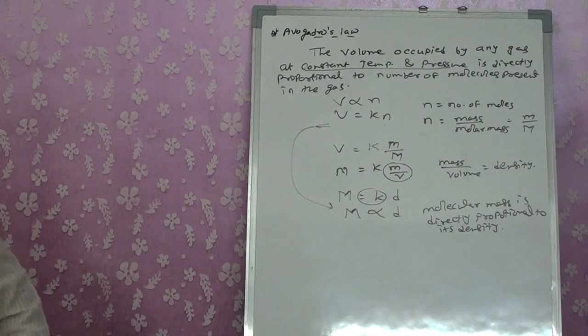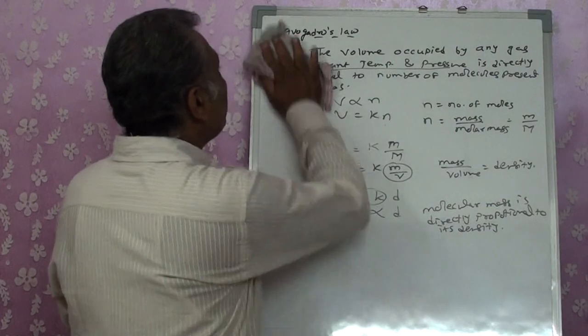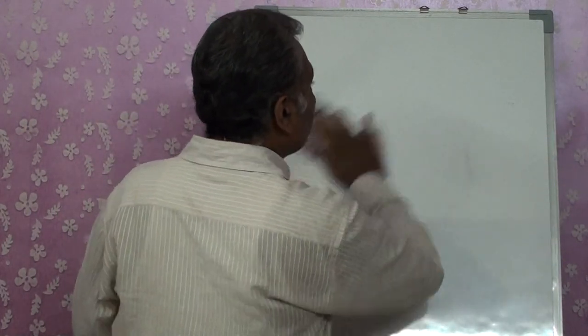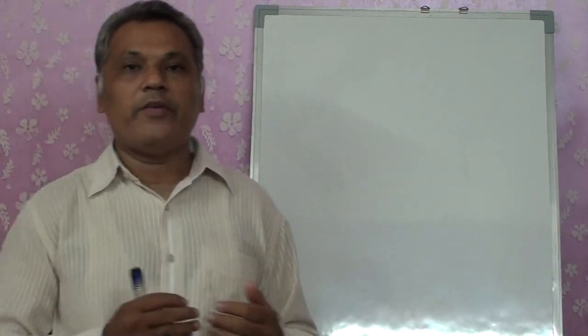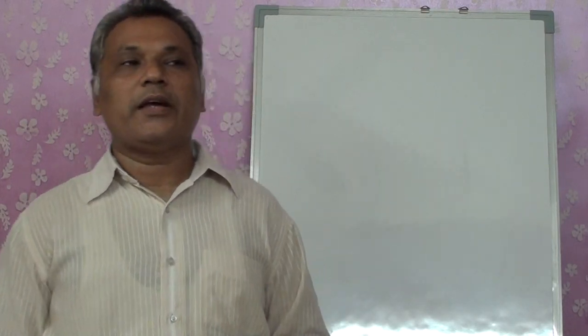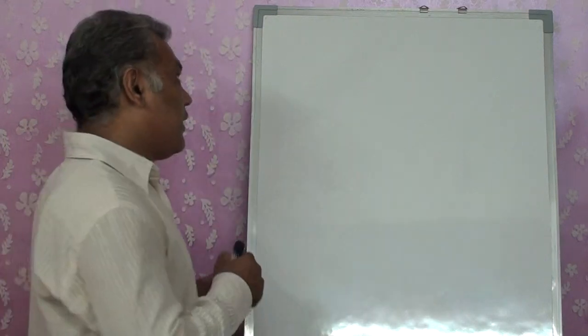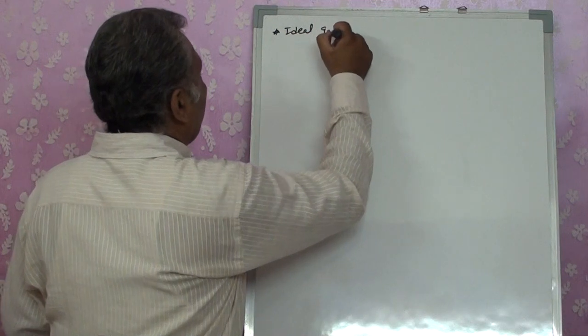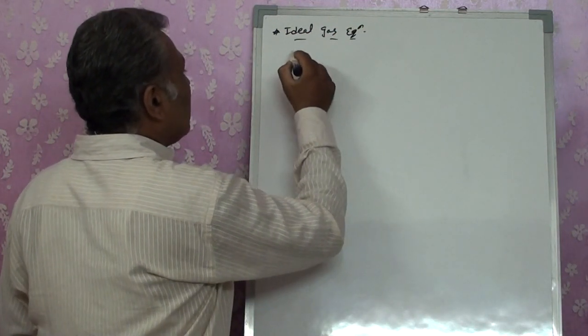After studying the four laws — Boyle's law, Charles' law, Gay-Lussac's law, and Avogadro's law — we can say that gases which obey all these laws act as ideal gases. An ideal gas has no intermolecular forces acting between its molecules; the molecules are completely free to move with no effect of external factors. Now we want to derive the ideal gas equation.